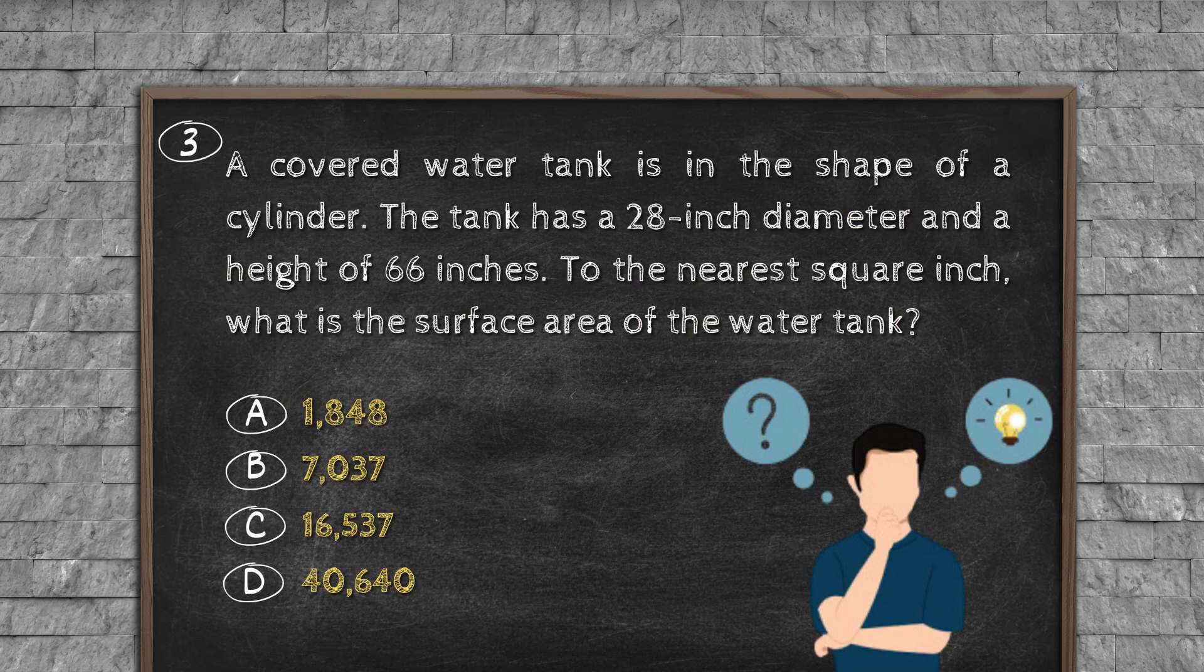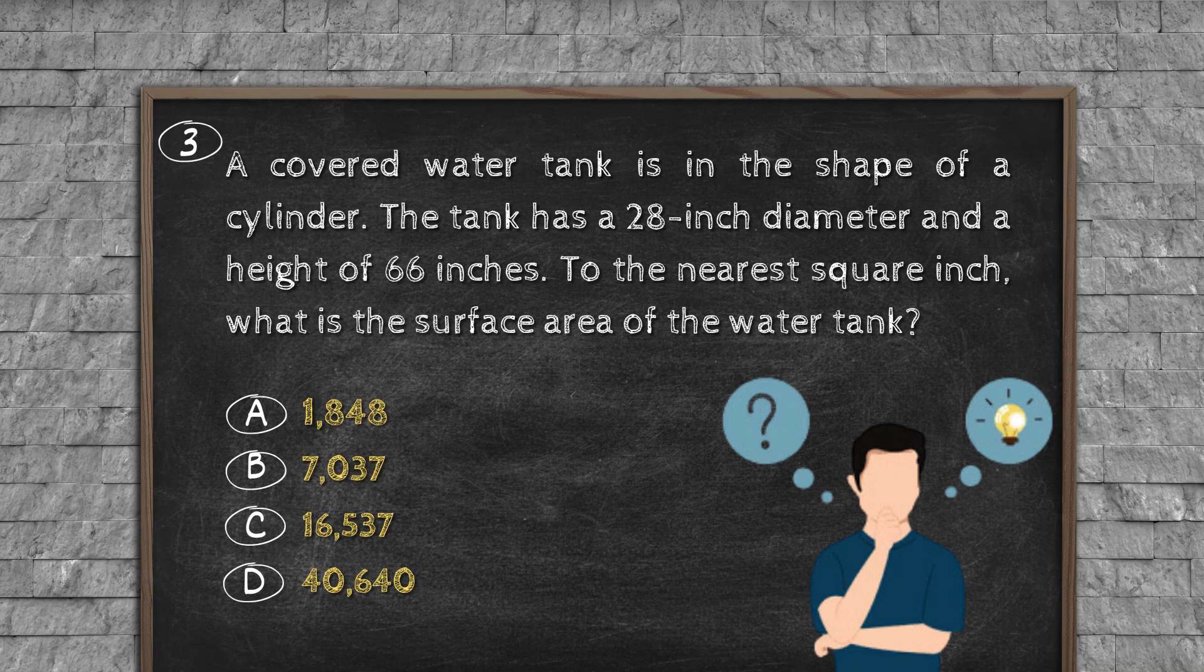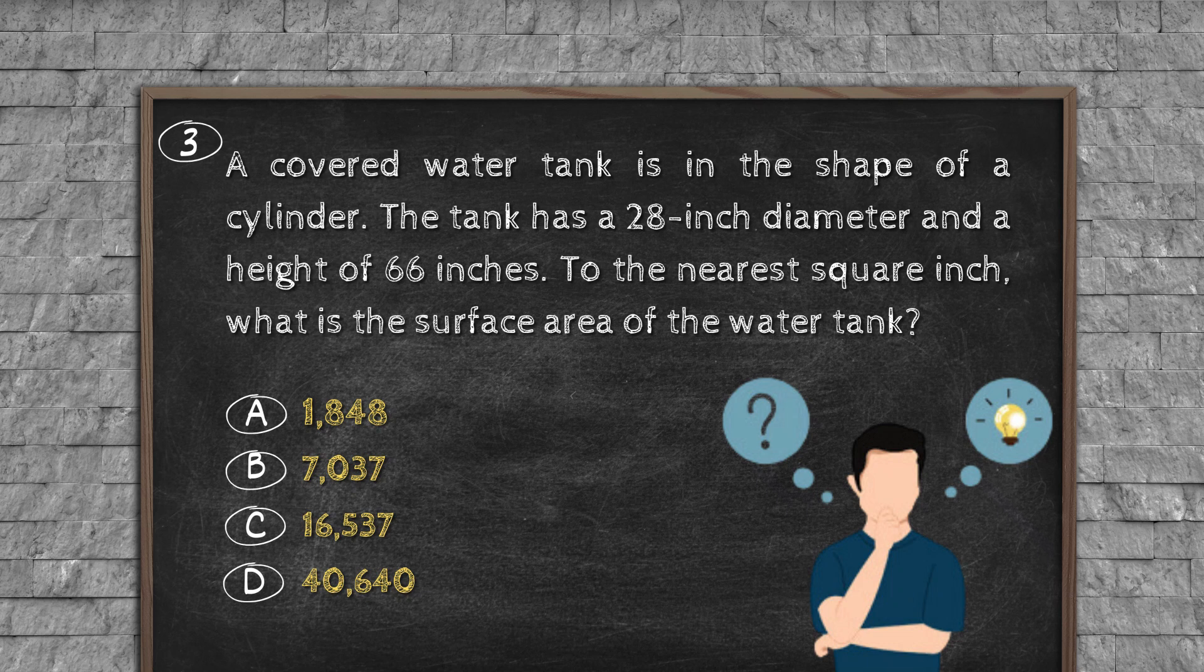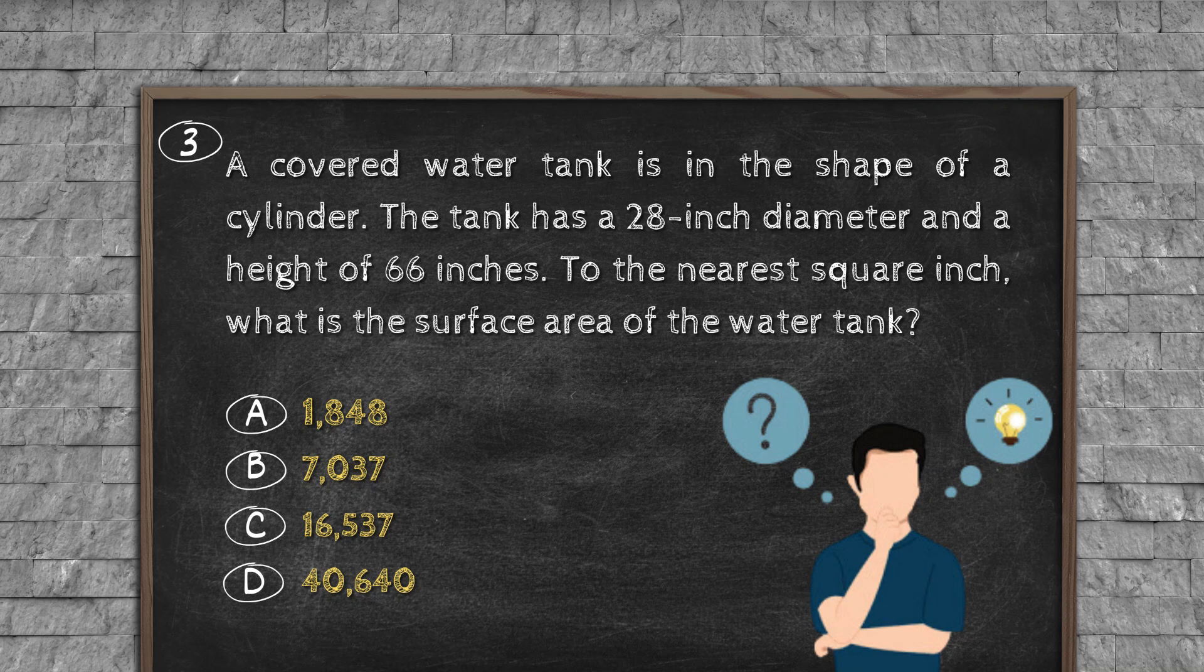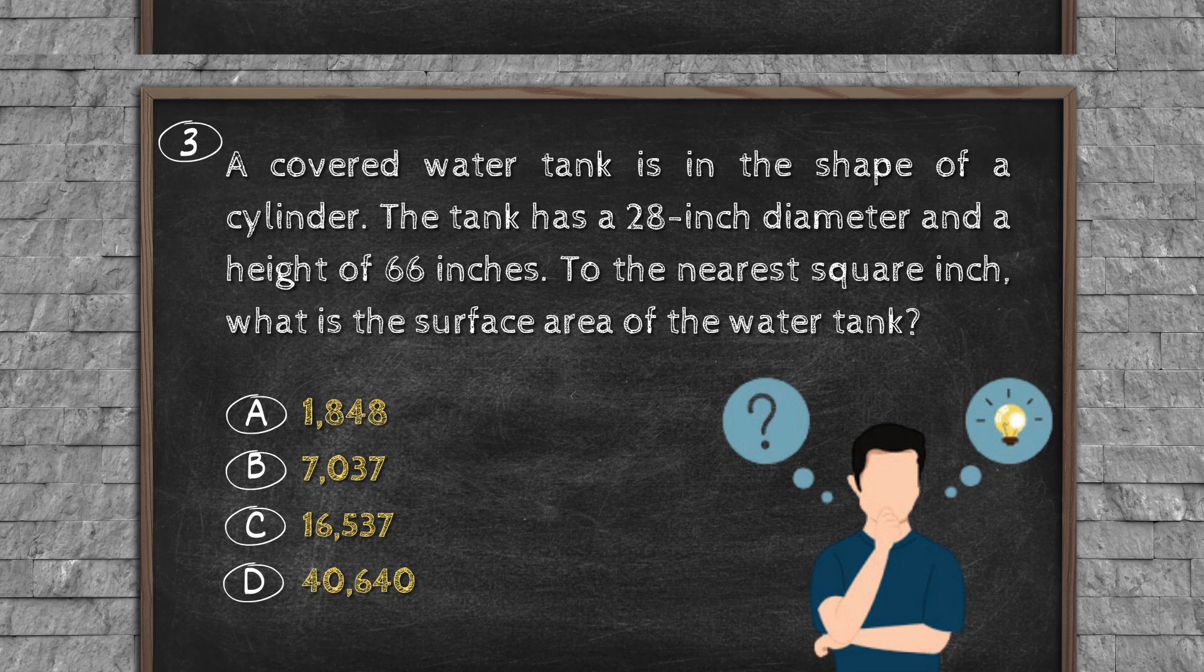Question number three: A covered water tank is in the shape of a cylinder. The tank has a 28-inch diameter and a height of 66 inches. To the nearest square inch, what is the surface area of the water tank? Option A: 1,848. Option B: 7,037. Option C: 16,537. Option D: 40,640.